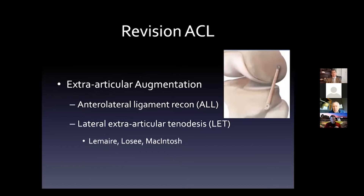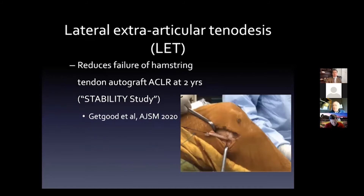Extra-articular augmentation has also seen increased interest recently. I do like the ALL reconstruction for some of my revisions - young cutting and pivoting athletes with ligamentous laxity and high-grade pivot shift. As long as you don't over-tension it, it's really just a check rein. The lateral extra-articular tenodesis is the other augmentation option - traditionally not successful alone, but helpful as augmentation using various splits of the IT band. The STABILITY study from Getgood's group in Canada showed reduced failure of hamstring tendon autografts with ACL reconstruction at two years when LET augmentation was added.